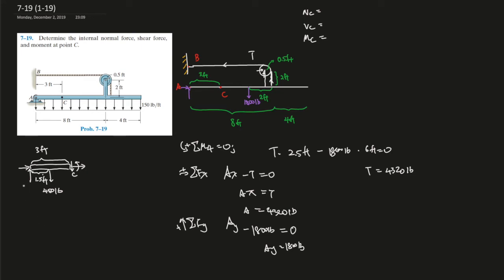So we have this force over here, Ay is 1,800, Ax is 4,320, so use the sum of the forces in the x direction equals to 0, and this is positive, 4,320 plus the normal force at C, so Nc equals to 0, so Nc should be negative 4,320 pounds, and round to 3 significant figures, so negative 4.32 kip.